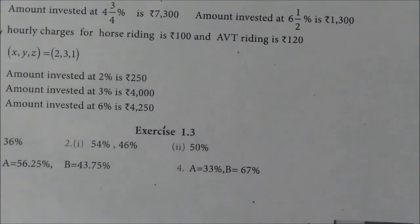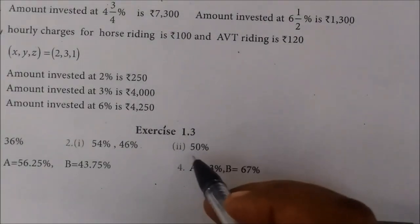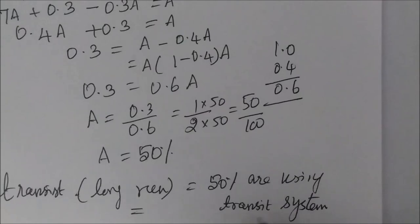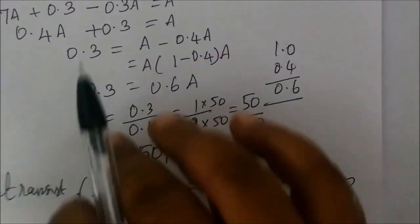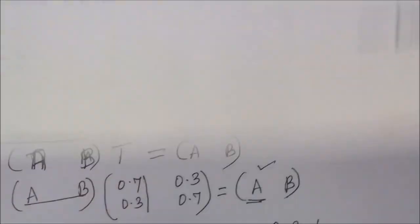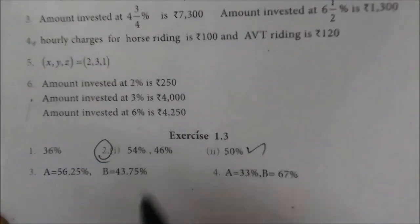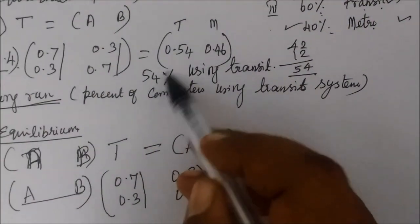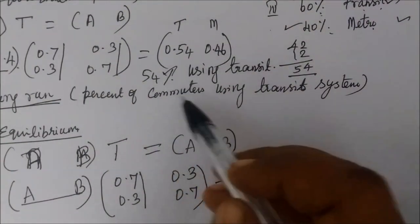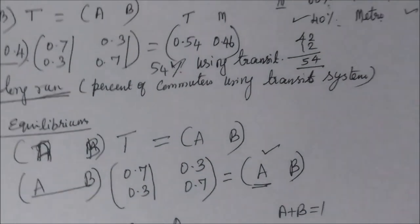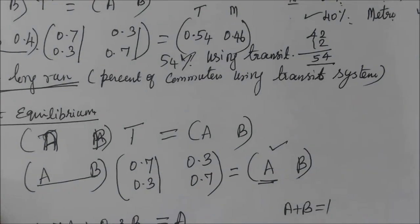We will verify the book answer. Exercise 1.3, Question 2: the long run answer is 50%. So 50% are using the Transit system — this is correct. Sub-question 1 gives 54% and 46% after one year. We will see the next question in the next video.